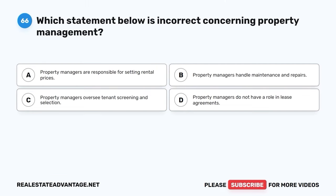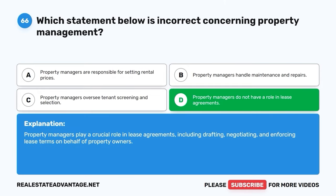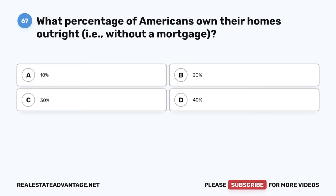Question 66. Which statement below is incorrect concerning property management? A. Property managers are responsible for setting rental prices. B. Property managers handle maintenance and repairs. C. Property managers oversee tenant screening and selection. D. Property managers do not have a role in lease agreements. The correct answer is D: Property managers do not have a role in lease agreements. Property managers play a crucial role in lease agreements, including drafting, negotiating, and enforcing lease terms on behalf of property owners.